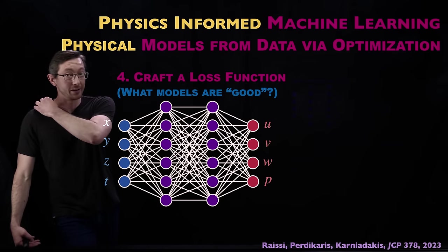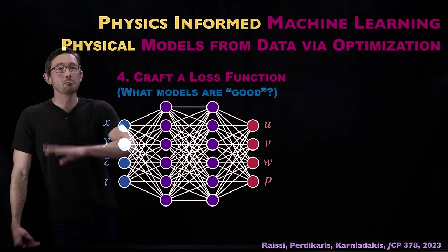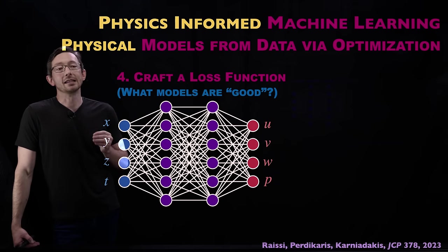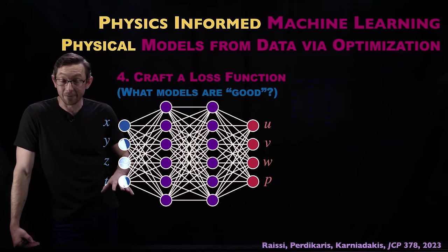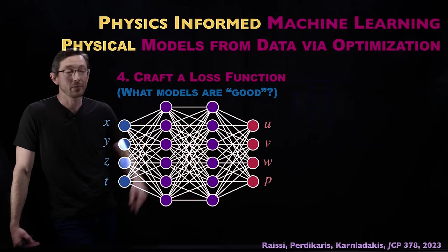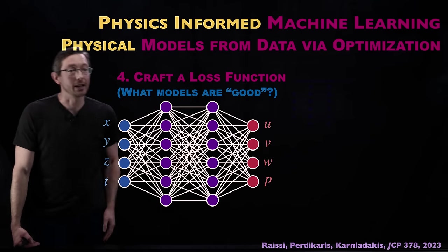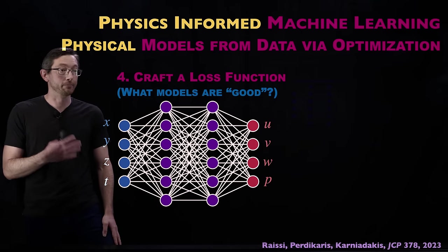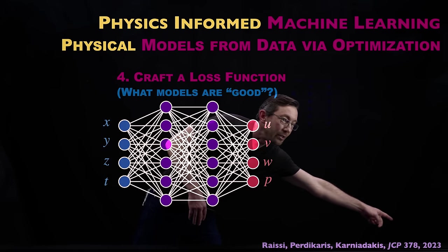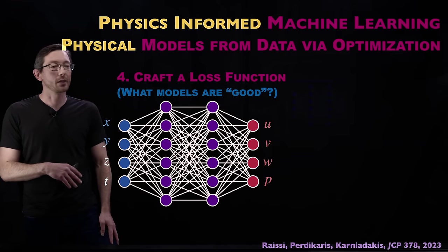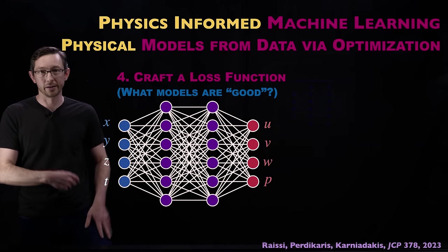The first example most natural to people when adding a loss function to make something more physical is the physics-informed neural network, or PINN, developed by Raissi, Perdikaris, and Karniadakis. They introduced this method a few years ago, and I'll have links in the description for all of these.